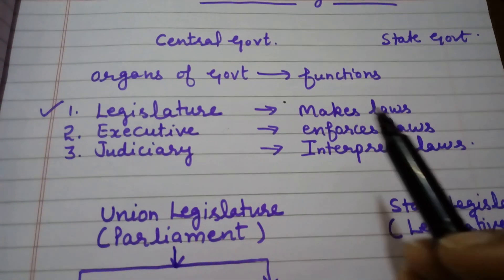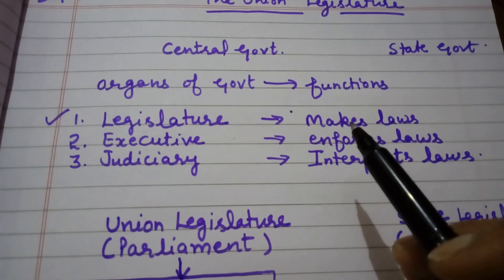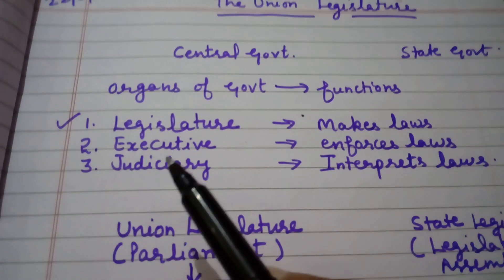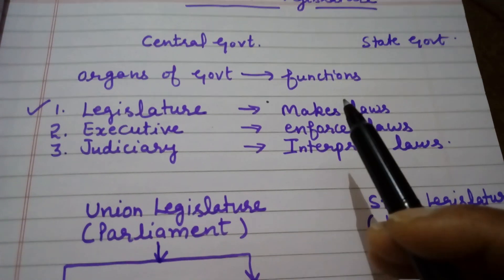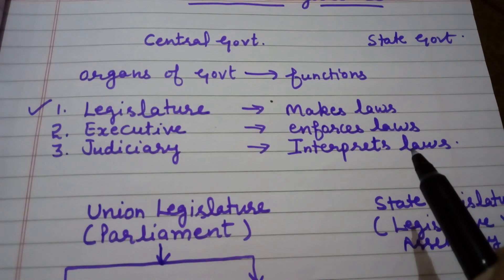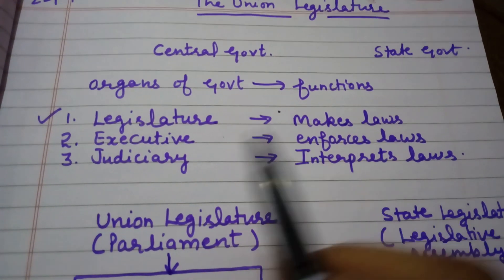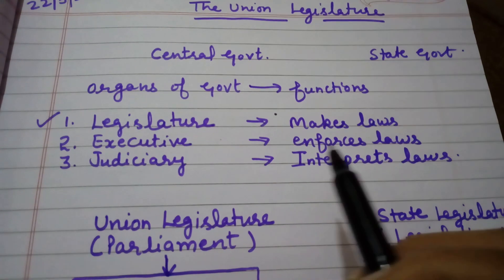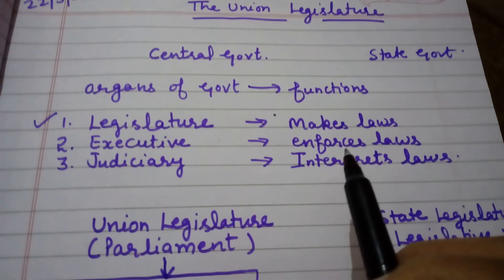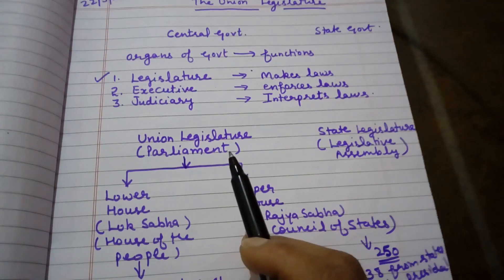The functions of these organs are: Legislature makes laws for the whole country including all the states and union territories, making new policies and rules. Executive implements all the laws made by legislature. Judiciary interprets the laws — interprets means protect. So legislature makes laws, executive enforces the laws, and judiciary protects the laws made by legislature and implemented by executive.